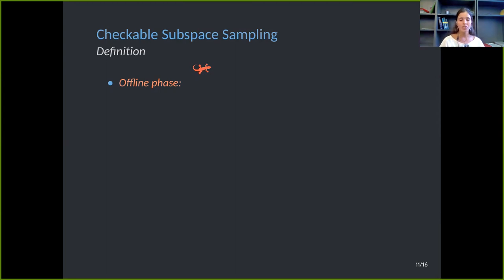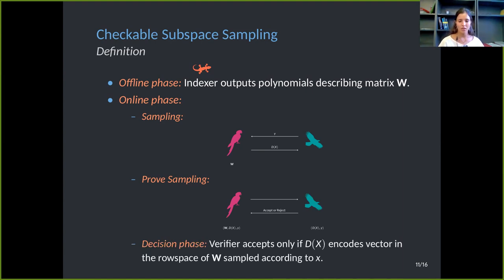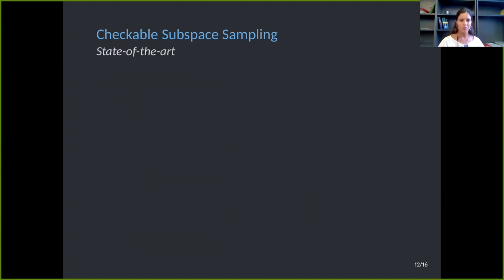So because it has the structure of a polynomial algebraic proof, we have the indexer that performs in an offline phase some computation to output polynomials that describe matrix W. Then in an online phase, prover and verifier will interact in two steps. The first one is to sample. So the verifier will send the challenge Y, and the prover will reply with encoding of the vector D, sampled according to Y. And then the prover has to convince the verifier that the sampling has been performed correctly. At the end, the verifier accepts or rejects depending on whether D(X) has been correctly computed. So again, this is the first step to construct a SNARK, an updatable universal SNARK. And it's implicit in all previous constructions.